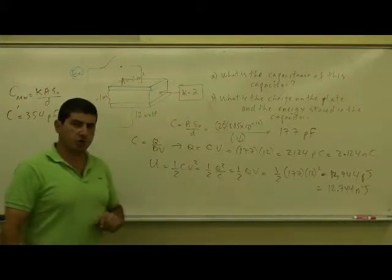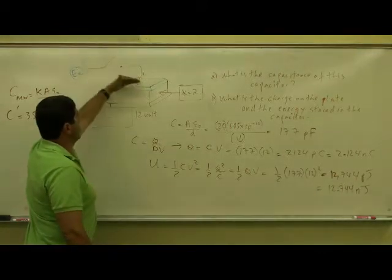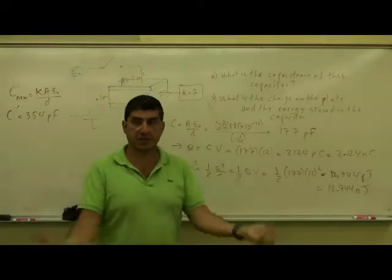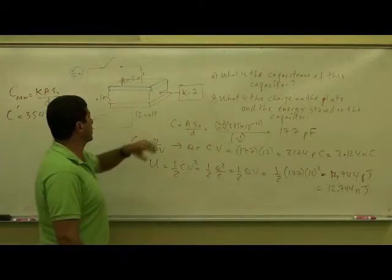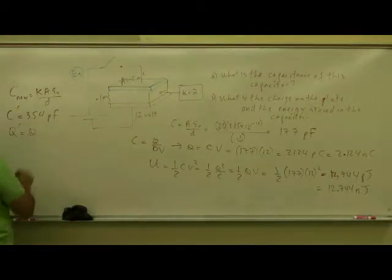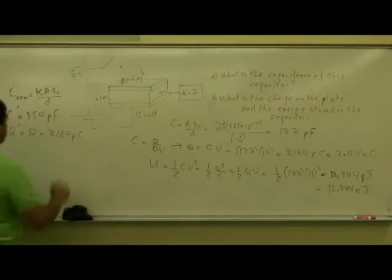What's happening to the charge on the capacitor? Well, since I've disconnected it, there is no new source of charge on the capacitor. The charge on the capacitor stays whatever it is. So when I install the dielectric in there, I'm keeping the charge the same. So Q prime is equal to the old Q, which was 2,124 picocoulombs.